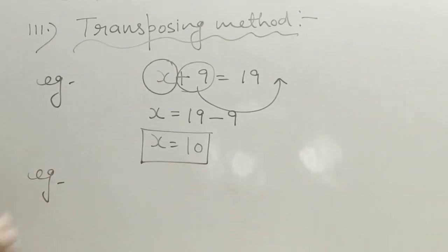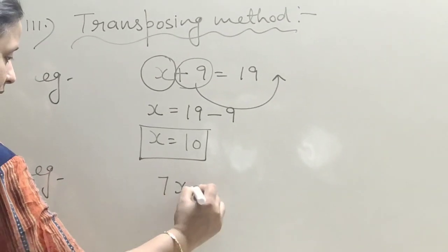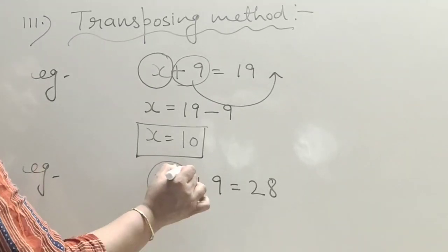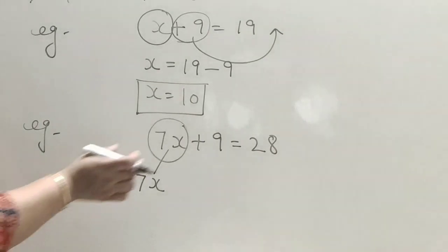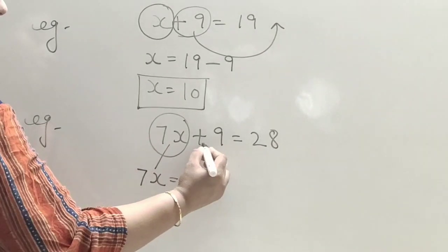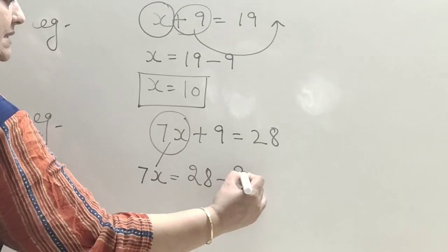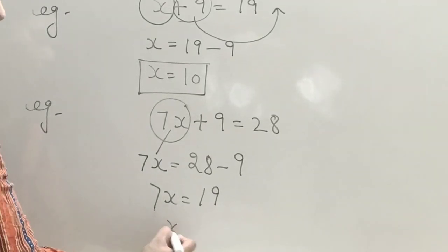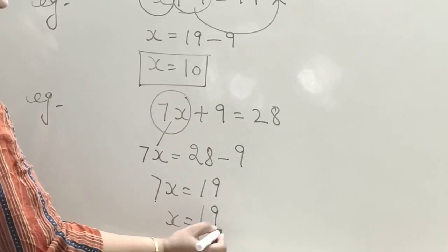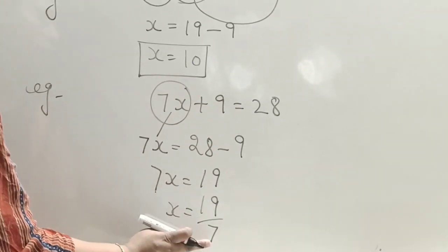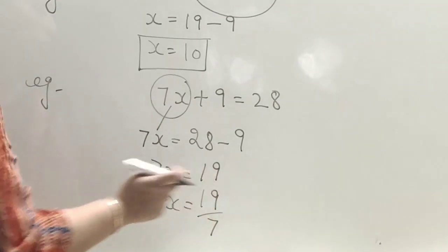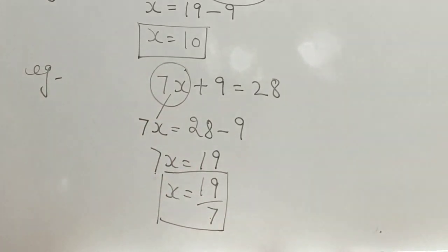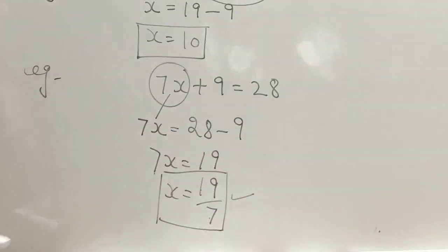Another example: 7x plus 9 is equal to 28. The variable term 7x stays on the left. The plus 9 transposes to the right as minus 9, giving 7x equals 28 minus 9, which is 19. Now 7 is multiplying, so it shifts to the right as division: x equals 19 upon 7. Since 19 and 7 are both prime numbers, this cannot be simplified further — it is the solution.